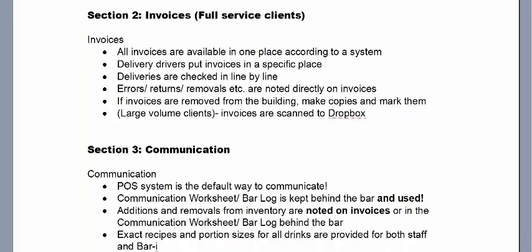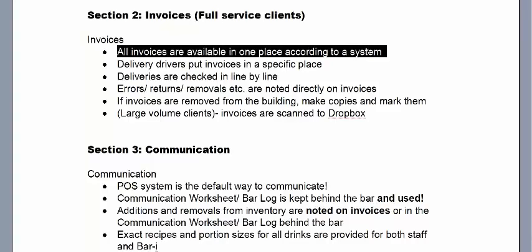Section 2: Invoices. This one is particularly important — if we had a dollar for every time we were chasing a missing invoice, we would be rich. It's the element that causes the most problems. The point of BarEye is to compare what's been poured versus sold, and to know usage you need a simple calculation: if you started with ten bottles and finished with eight, you used two. But with deliveries, you also need to know what was delivered, and we account for that using invoices. So all invoices must be together in a single place, consistently filed according to a system.